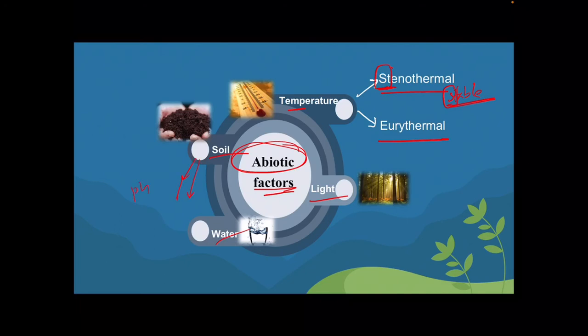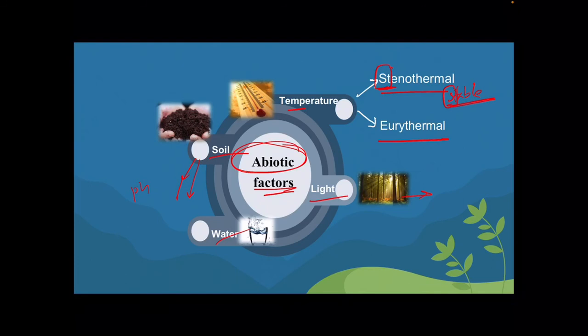About soil, we consider pH value and nutrient content — both very important. For light, plants need it for photosynthesis, so light plays a major role in plant ecosystems as well as in higher-level organisms. Water also plays a key role, and can even affect reproduction.